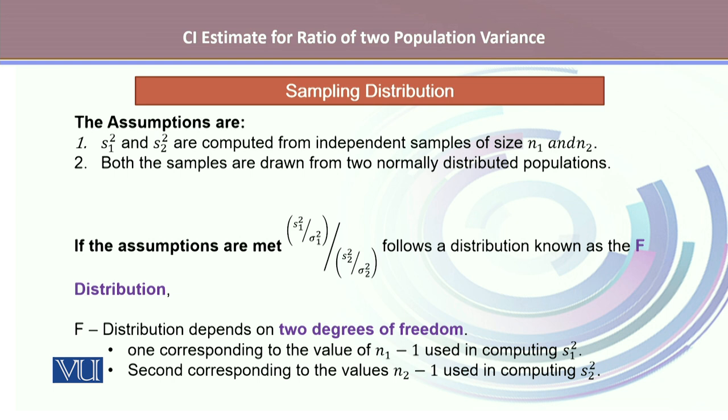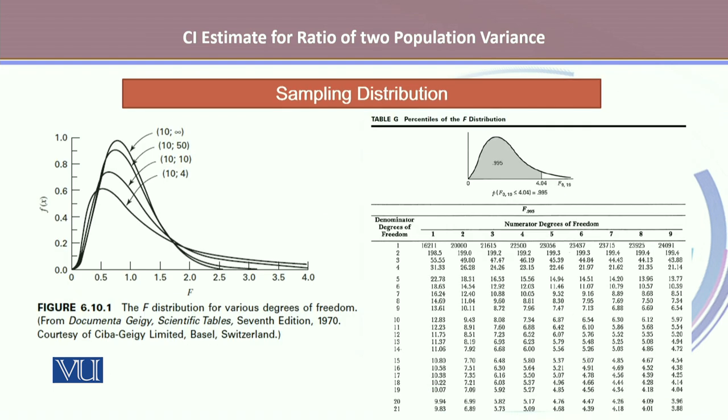One corresponding to the value of N1 minus 1 used in computing S1 square, and the second degree of freedom corresponding to the value N2 minus 1 that is used in computing S2 square.